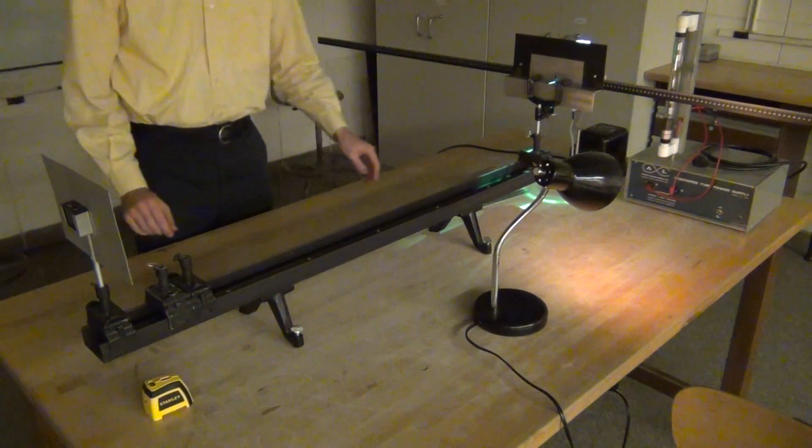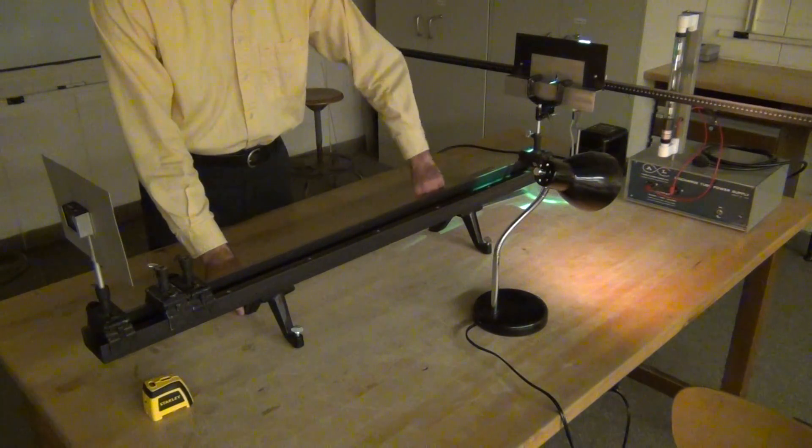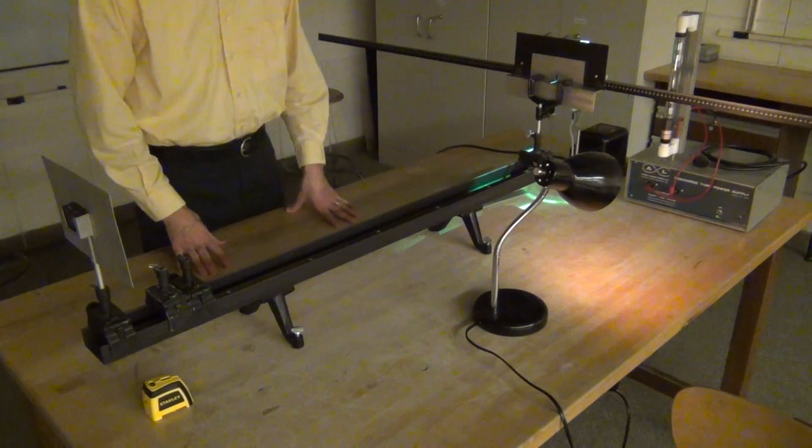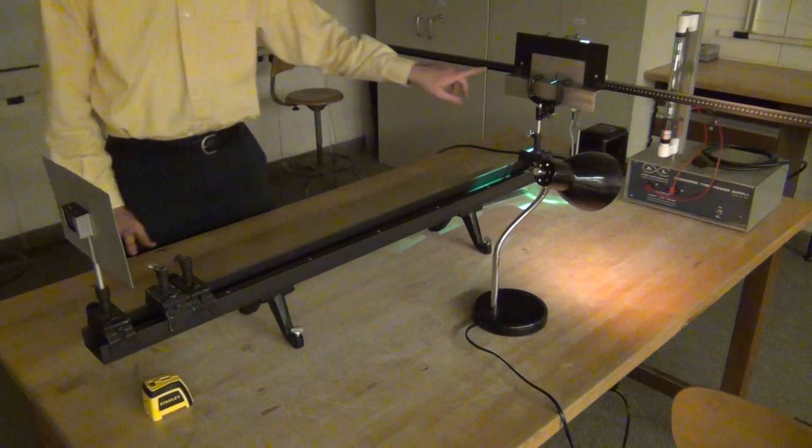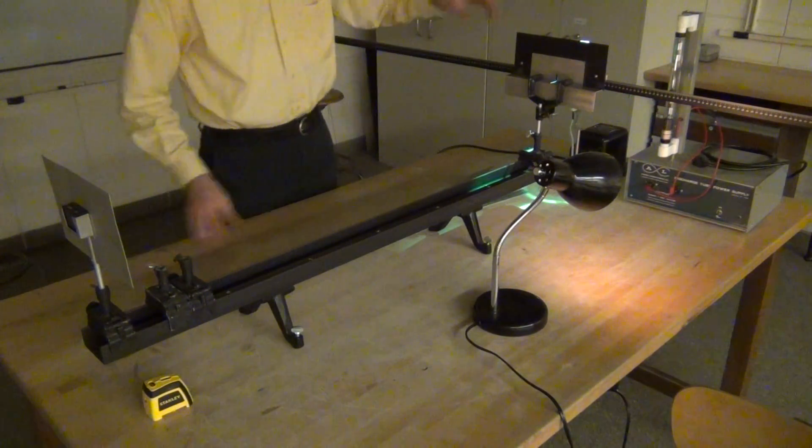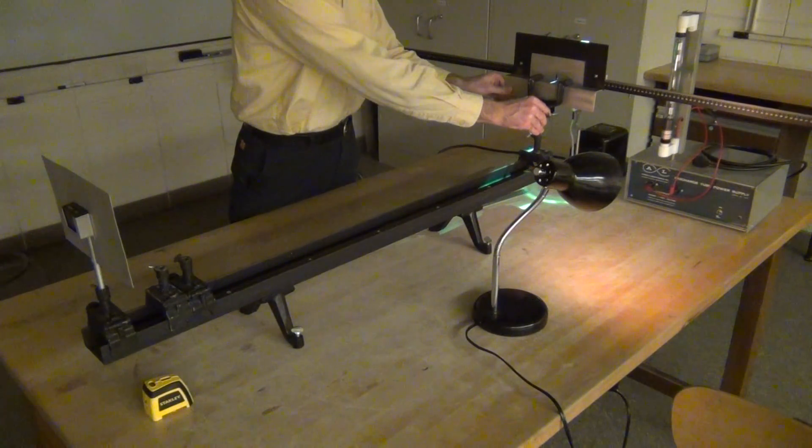You may have to level your table, use the little thumb screws to level your optical bench if you notice it tilting one way or another. And you should have the same distance on both sides. If not, you might have to adjust the angle there.